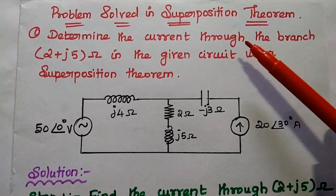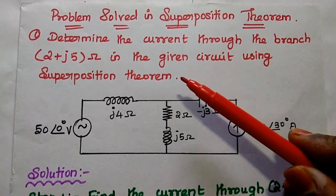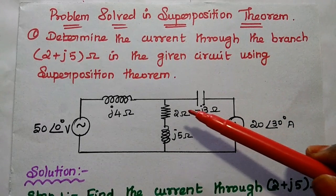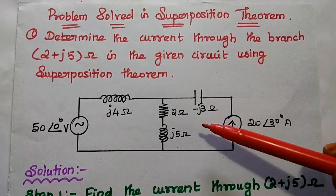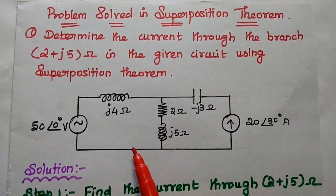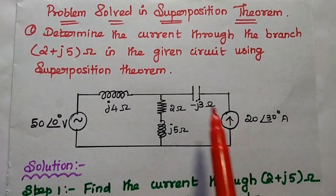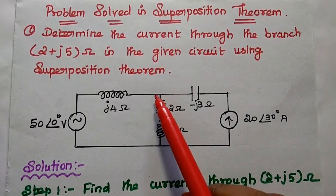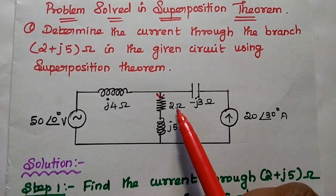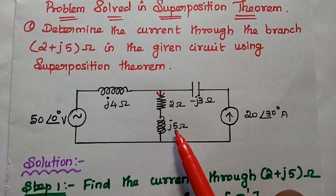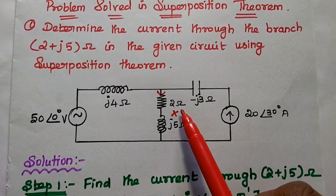We are going to solve one important problem in superposition theorem. Determine the current through the branch 2+J5Ω in the given circuit using the superposition theorem. This is the given circuit with one voltage source and one current source. We are going to find out the current through this branch, which has 2 Ohm and J5 Ohm in series, so we can write the branch as 2+J5 Ohm.